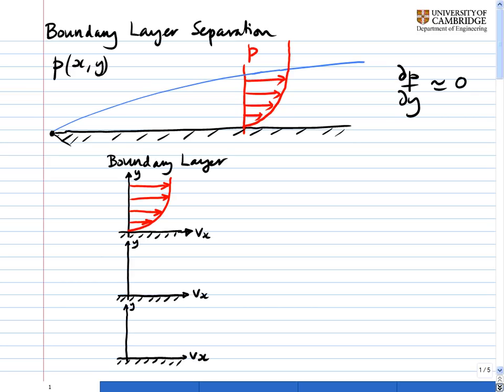I've just copied that underneath, and in this first case, we'll say that the pressure change in the x-direction, dp dx, is equal to zero. In other words, the pressure is constant in the x-direction.